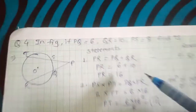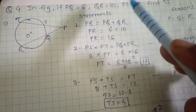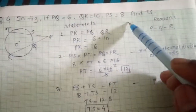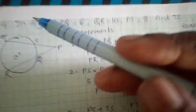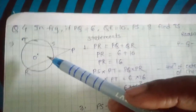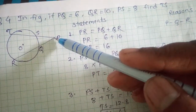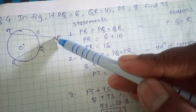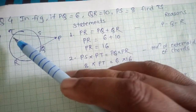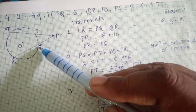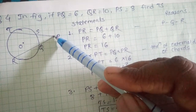Now example number four. In the figure, PQ = 6, QR = 10, PS = 8, find TS. Looking at the figure, the two chords intersect in the external part of the circle at point P. So we apply the theorem of external division of chords.